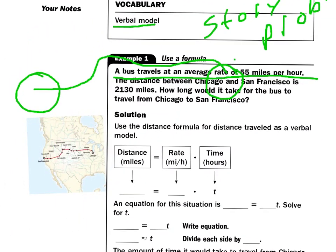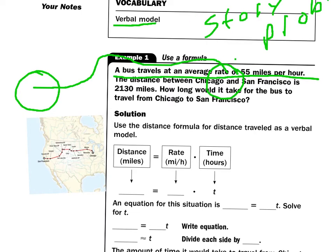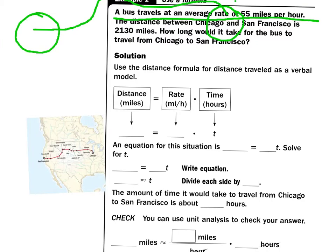And they're telling us that that is about 2,130 miles away. How long would it take for a bus to travel from Chicago to San Francisco? So that's a verbal model. That's words asking us how are we going to figure that out.